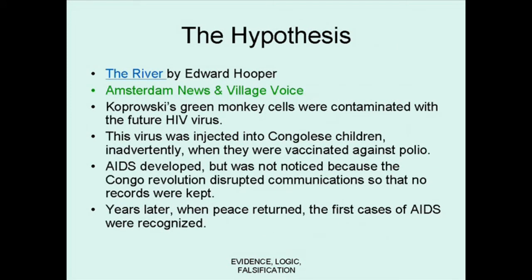The hypothesis, first brought forth by Edward Hooper and then promulgated in the United States, was that Koprowski's green monkey cells were contaminated with a monkey virus that became the HIV virus. This was injected into the Congolese children inadvertently when they were vaccinated against polio. AIDS developed, but the Congo broke into civil war at that point, and communications were considerably disrupted. So, according to the Hooper hypothesis, years later when peace returned, the first cases of AIDS were recognized. The argument would then be that AIDS was created by an inadvertent carrying of the virus with the polio virus.